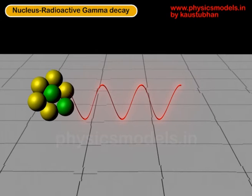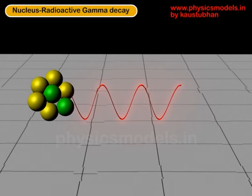Hi, in this video I would like to explain to you the concept of gamma decay, a type of radioactive decay. In my earlier videos I had explained alpha and beta decays. Those were particles that came out from a parent nucleus, highly unstable, which then became a new element called the daughter nucleus.